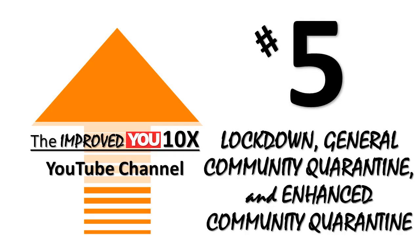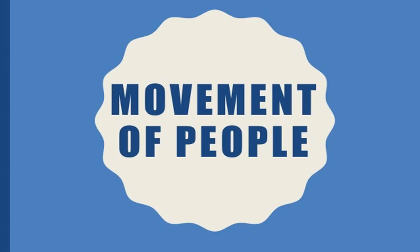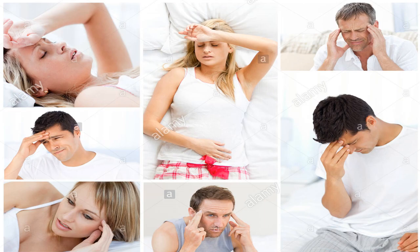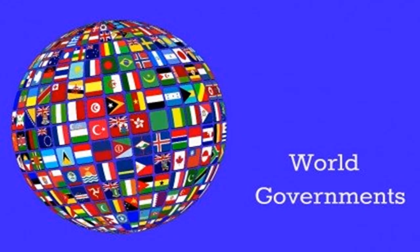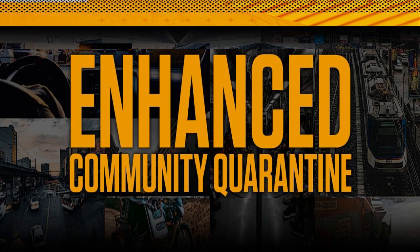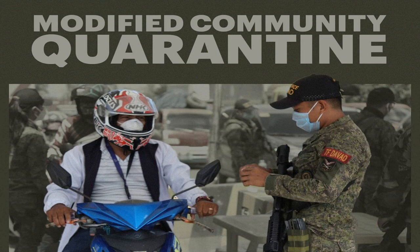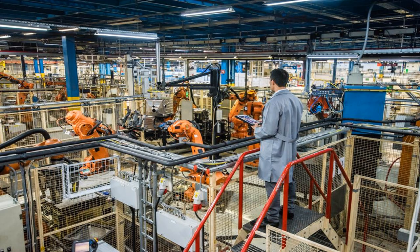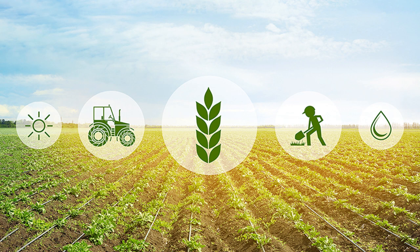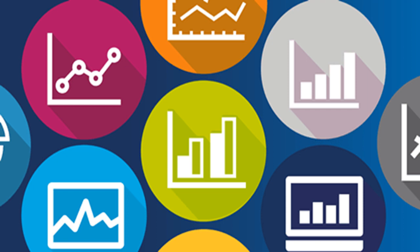Number 5: Lockdown, General Community Quarantine, and Enhanced Community Quarantine. Quarantine separates and restricts the movement of people exposed to contagious diseases to see if they become sick — they may not know they were exposed, or may have the disease without showing symptoms. Some governments enforce the Enhanced Community Quarantine, or ECQ, which covers a larger area under quarantine. Modified Community Quarantine would allow some manufacturing and service industries to resume operations, such as export industries and agricultural production. General Community Quarantine, or GCQ, is a form of quarantine with more relaxed measures compared to ECQ, usually enforced in provinces and cities considered to have moderate or low risk during a pandemic.